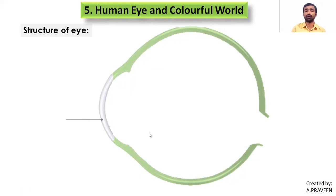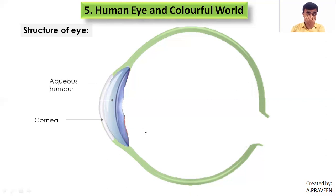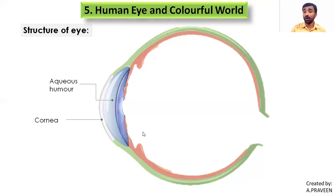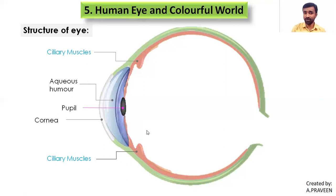The first part we can reach is the cornea — a transparent layer. After crossing it and going inside, a liquid is present — a liquid is filled there. Behind the cornea, we have the two parts we observed externally: the colorful part and the black colored spot. That is simply the iris and the pupil. They are connected with ciliary muscles. The black colored spot is the pupil, and around it we have the iris.